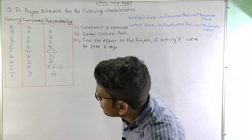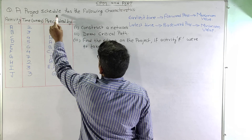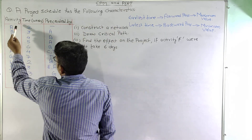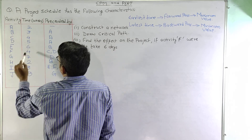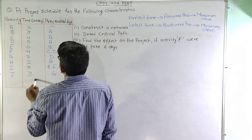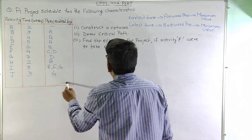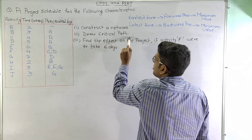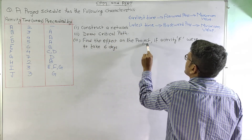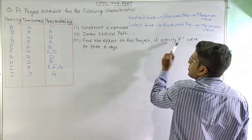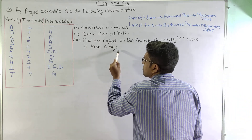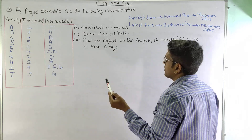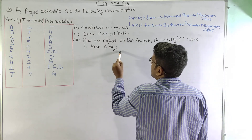Let's quickly move on to the problem. The problem says that a project schedule has the following characteristics. There are certain activities and the time of each activity is given along with the precedence. We need to construct the network diagram, draw the critical path, and find the effect on the project if activity F were to take 6 days. Initially, activity F is taking 4 days, so we need to find out what the effect will be if it takes 6 days.